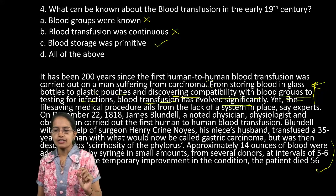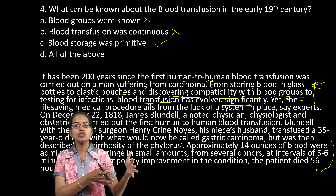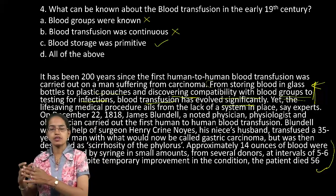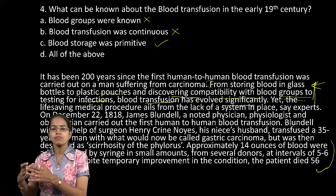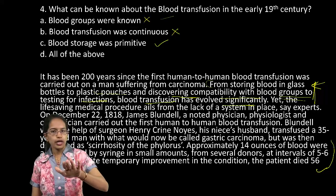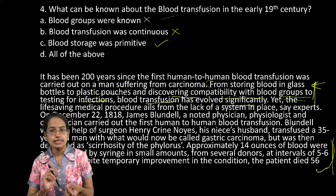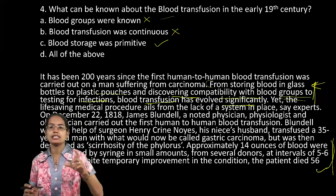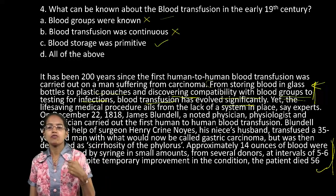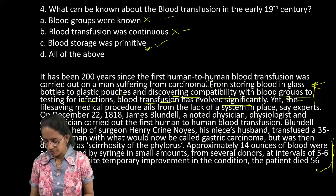The second line: from storing blood in glass bottles to plastic pouches, and discovering compatibility, to testing infections — blood transfusion has evolved significantly. The most primitive thing known was storing the blood. Later came compatibility with blood groups, testing for infections, and blood transfusion. Blood groups were not known during that early time, so A is incorrect. In the last sentence, 14 ounces of blood were administered by syringe in small amounts — you administer by syringe, the syringe gets empty, you administer again — meaning it was not a continuous process. So blood transfusion was continuous is again incorrect. The only correct statement that remains is C: blood storage was primitive.